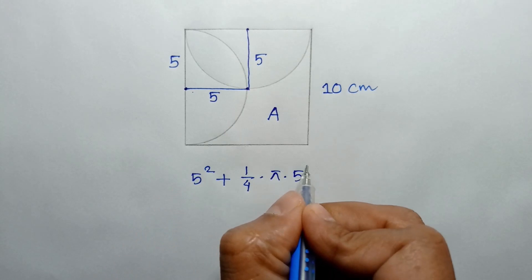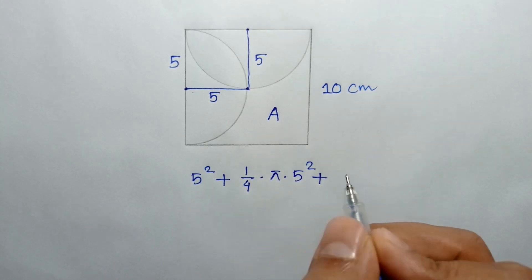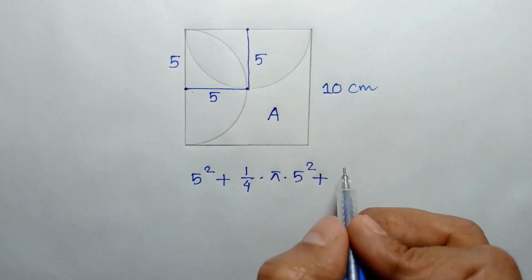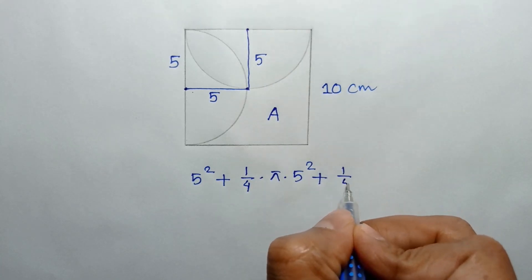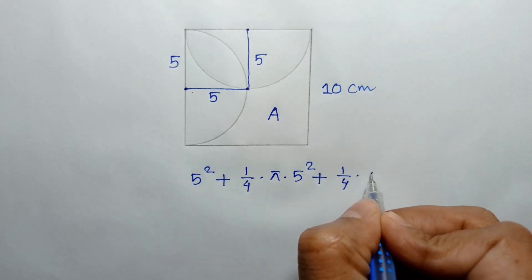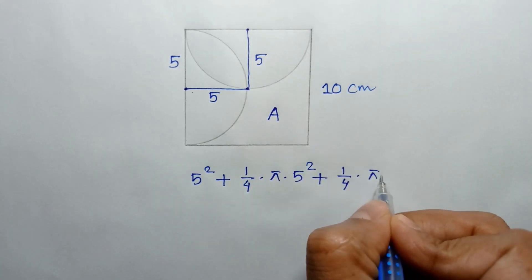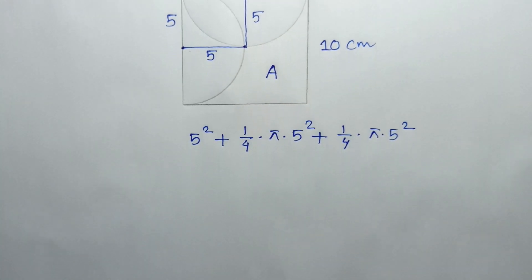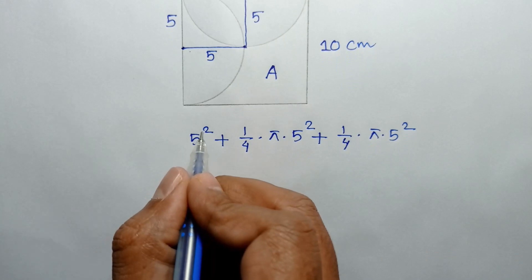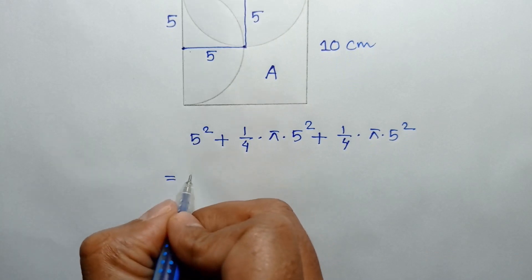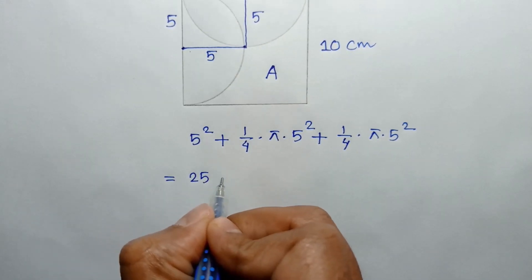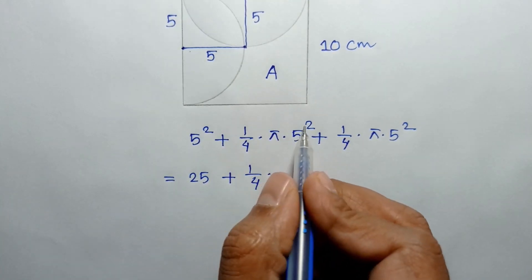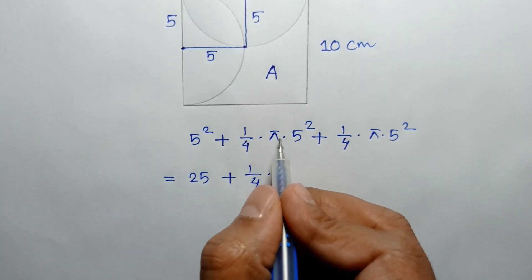So 5 squared plus similarly the area of this portion is one-fourth times π r squared, so 5 squared. This equals 25 plus one-fourth times 25π.